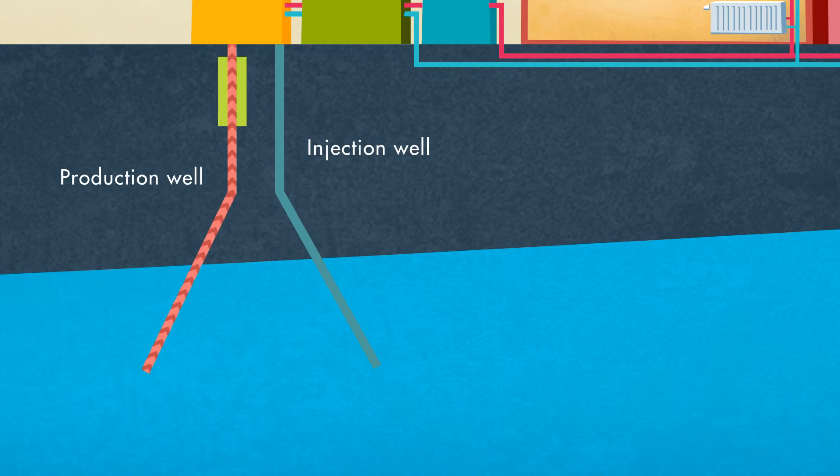Meanwhile, the cool geothermal brine can then flow back underground through the injection well where it is reheated by the earth and the cycle continues.